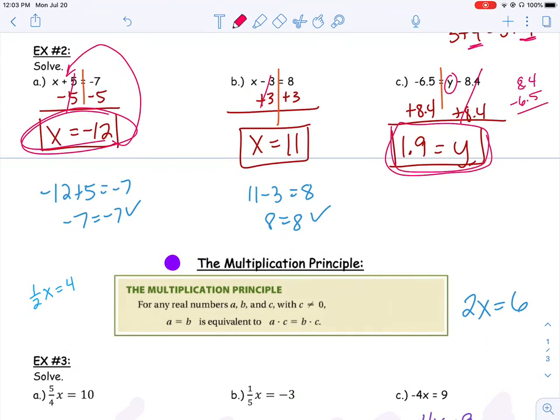So always make sure that you do the opposite or inverse function to cancel the numbers away from your variable, and then you can always double check by plugging your numbers back into the original to see if it works.